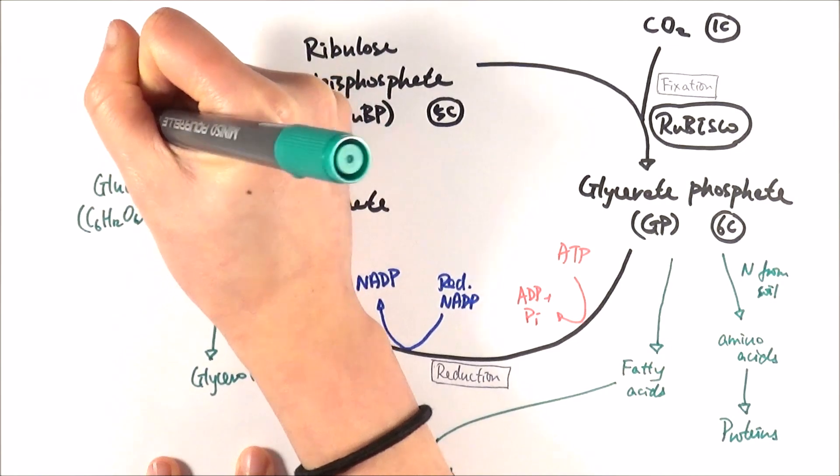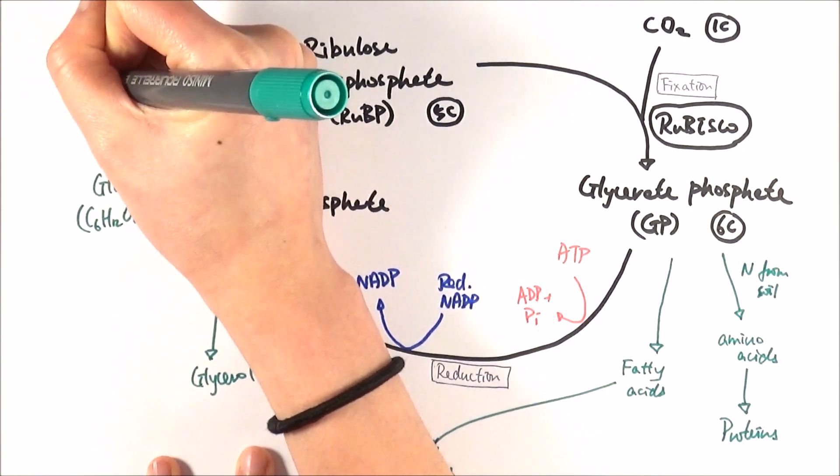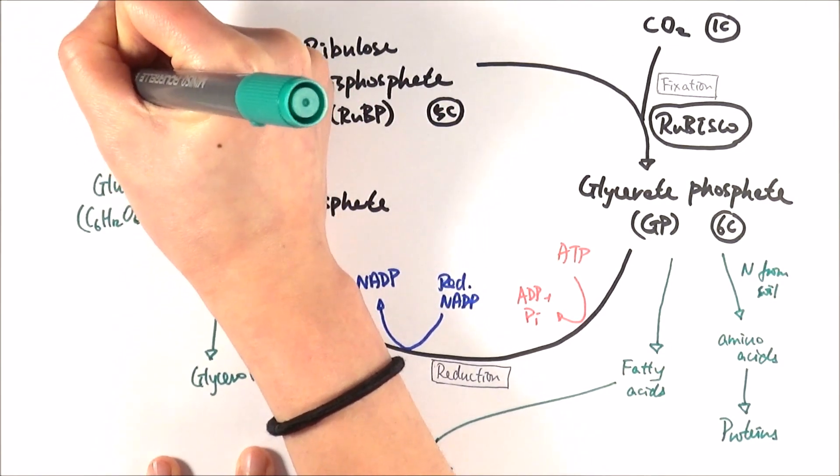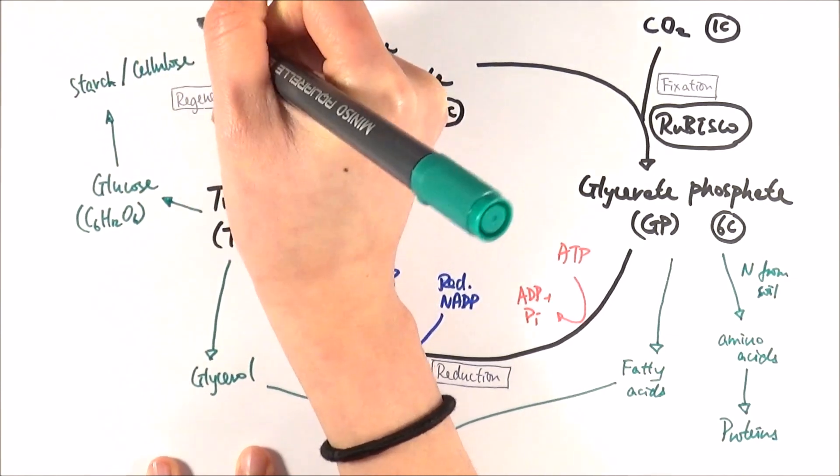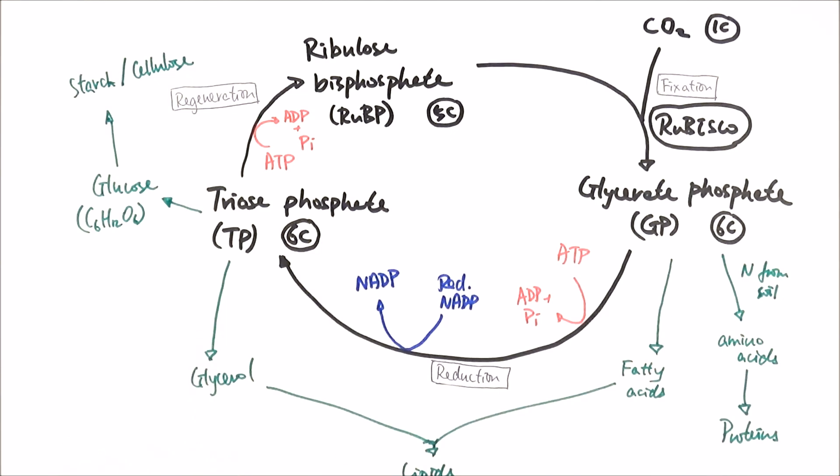And glucose can go off to make starch or cellulose, depending on which one is needed. And cellulose is used to make the cell wall, and starch can be made in starch granules, which are energy storage.